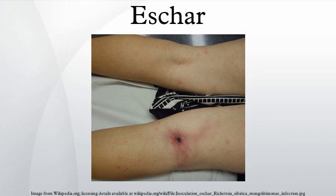Black eschars are most commonly attributed to anthrax, which may be contracted through dead animal exposure, but can also be obtained from Pasteurella multocida exposure in cats and rabbits. A newly identified human rickettsial infection, Apachyri rickettsiosis, can be differentiated from Rocky Mountain spotted fever by the presence of an eschar at the site of inoculation.